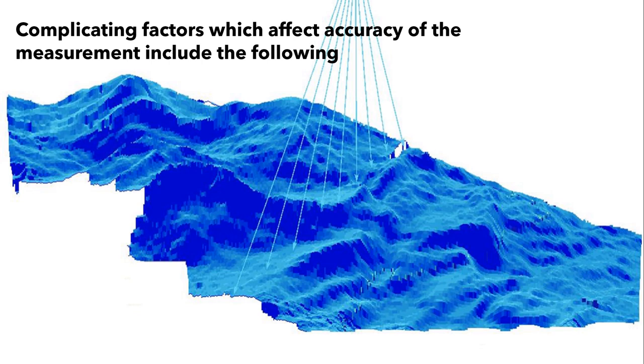Depths on nautical charts are therefore always referred to a datum, a horizontal plane somewhat lower than mean sea level below which the tide rarely falls. Mean sea level isn't used on nautical charts as 50% of the time there would be less water than shown on the chart.